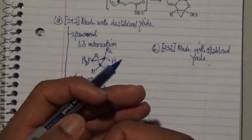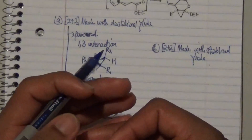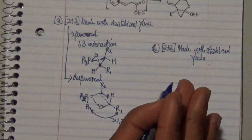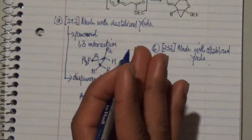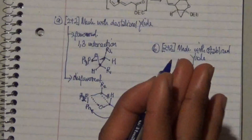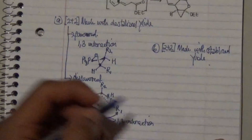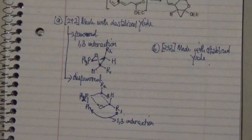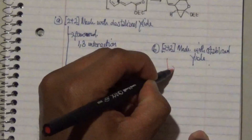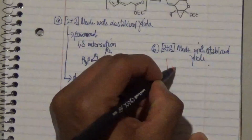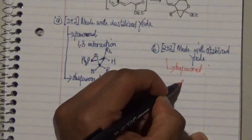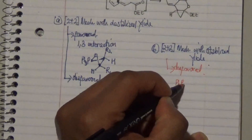For the destabilized ylide, the disfavored intermediate enhances the 1,2-interaction while the favored one prevents the 1,2-interaction, thereby forcing the enhancement of the dipole-dipole interaction. Moving to mechanism B — the disfavored intermediate here arises from the dipole interaction where we have PPh3 with R2.